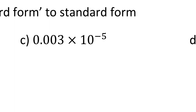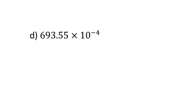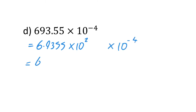Part C — I'm going to put 0.003 into standard form: that's 3 times 10 to the minus 3, and I had times 10 to the minus 5, which becomes 3 times 10 to the minus 8. Part D — I change 693.55 into standard form: that's 6.9355 times 10 to the power of 2, then times 10 to the minus 4, so that's just 6.9355 times 10 to the minus 2 overall — and that's your answer in standard form.